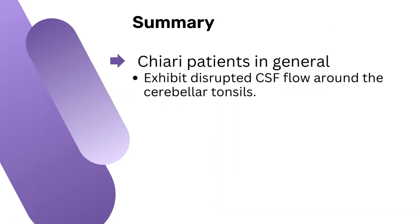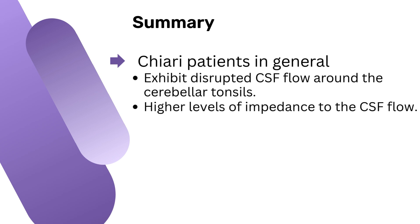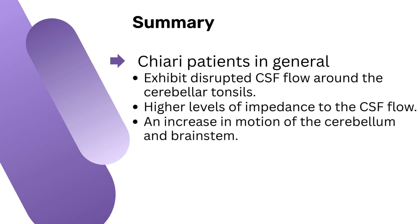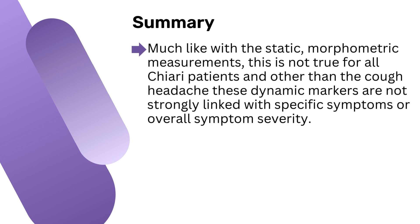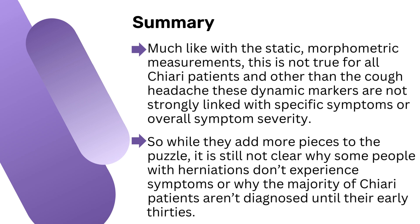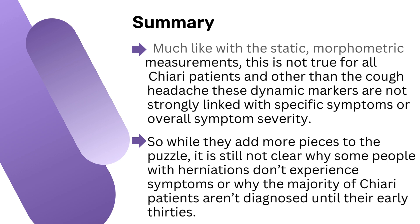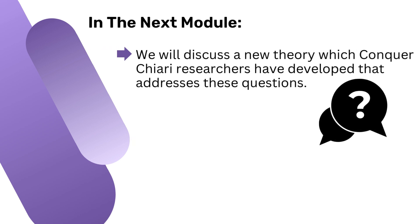To summarize, Chiari patients in general exhibit disrupted CSF flow around the cerebellar tonsils, higher levels of impedance to the CSF flow, and an increase in motion of the cerebellum and brain stem, all of which can be quantified. However, much like with the static morphometric measurements, this is not true for all Chiari patients. And other than the cough headache, these dynamic markers are not strongly linked with specific symptoms or overall symptom severity. So, while they add more pieces to the puzzle, it is still not clear why some people with herniations don't experience symptoms or why the majority of Chiari patients aren't diagnosed until their early 30s. In the next module, we will discuss a new theory which Conquer Chiari researchers have developed that addresses these questions.